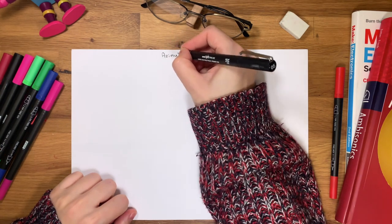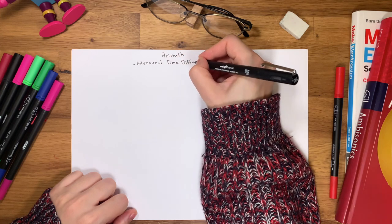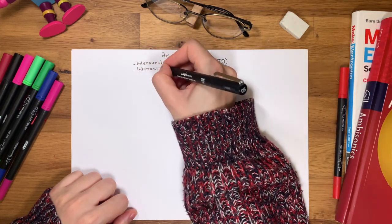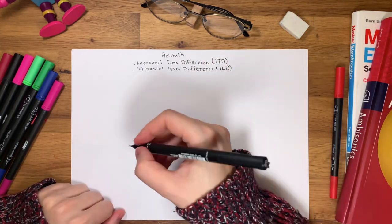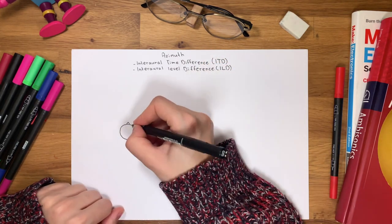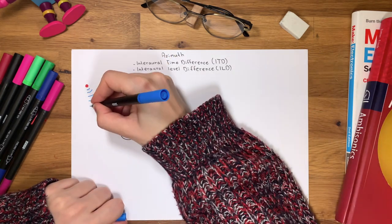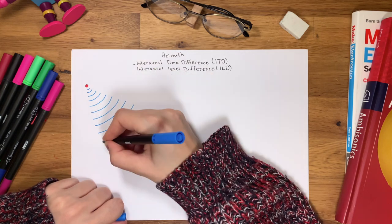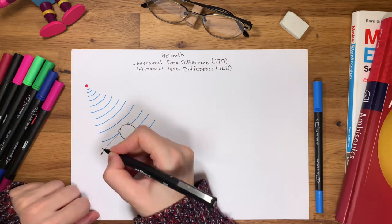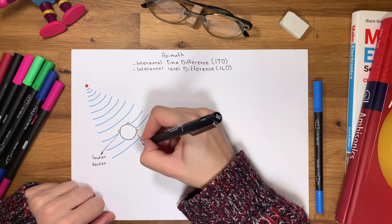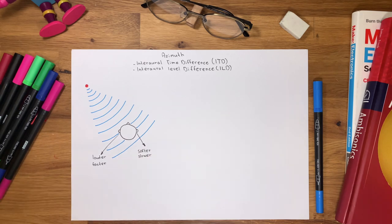The azimuth of sound is determined by two primary cues: interaural time difference (ITD) and interaural level difference (ILD). Imagine that the sound source is to the left of your head. The right ear is further from the source than the left ear, so the sound will arrive there after it arrives at the left ear. The right ear is also in the acoustic shadow of the head, so the sound's amplitude level will be less there than at the left ear.